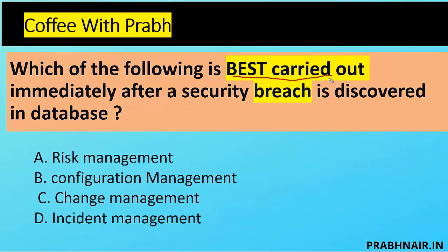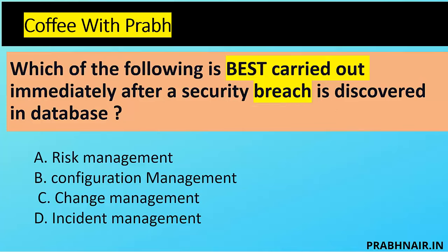Next coffee shot: which of the following is best carried out immediately after a security breach is discovered in the database? Option A is risk management — a great process, but the question says immediately. Option B is configuration management — that's an outcome, post-breach when we introduce necessary controls. Option C is change management — needed when modifying controls after the breach. But the first thing best carried out immediately after a security breach is incident management, because the ultimate goal of incident management is to reduce the impact. The answer is D.